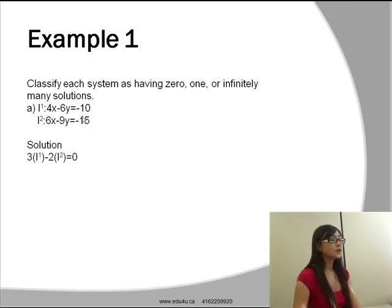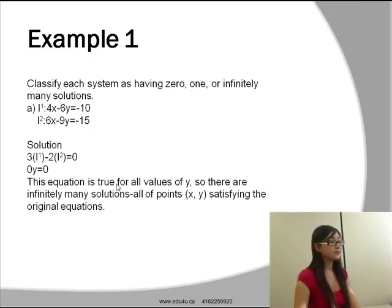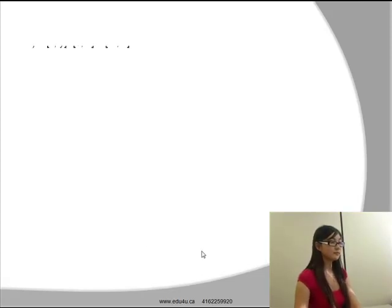What we have to do in this case is to make the coefficients in front of the x value equal to each other, so we can subtract one equation from the other and thus eliminate the x value. So if we multiply the first equation by 3 and the second equation by 2, we will get 12x for both of them. When we subtract one equation from the other, we will get 0. So we get 0y=0. Therefore, we will have infinitely many solutions. All points x,y satisfy the original equations.